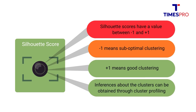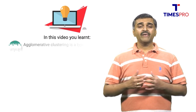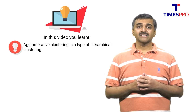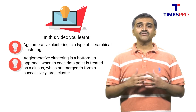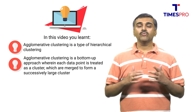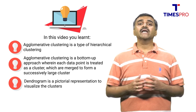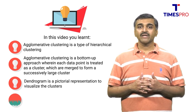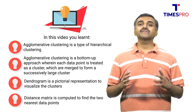Inferences about the clusters can also be obtained through cluster profiling. Let's summarize the key takeaways: agglomerative clustering is a type of hierarchical clustering and a bottom-up approach wherein each data point is treated as a cluster, which are then merged to form a successively larger cluster. The dendrogram is a pictorial representation to visualize the clusters, and the distance matrix is computed to find out the two nearest pairs of data points. Thanks for watching this video.